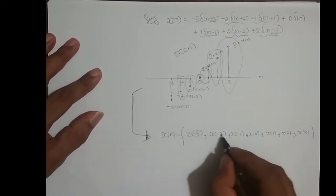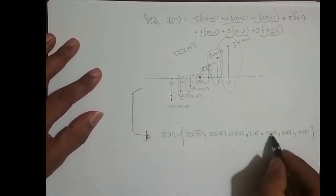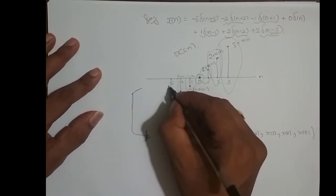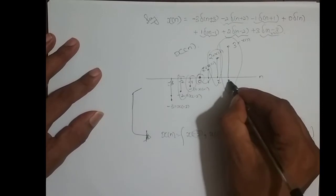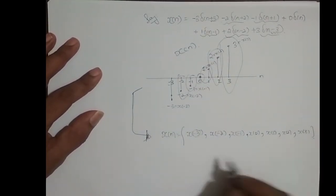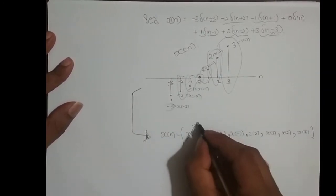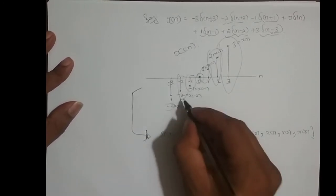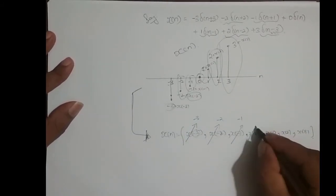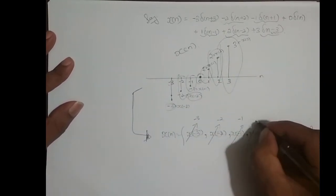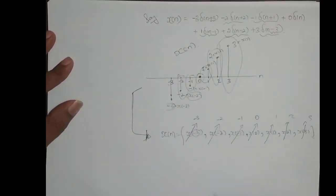The values inside the bracket — minus 3, minus 2, minus 1, 0, 1, 2, 3 — these are the index values n. And the sample values x of minus 3, x of minus 2, x of minus 1, x of 0, x of 1, x of 2, x of 3 are the amplitudes at those indices. So x of minus 3 has amplitude minus 3, x of minus 2 has amplitude minus 2, x of minus 1 has amplitude minus 1, x of 0 has no amplitude so it is 0. Similarly, x of 1 is 1, x of 2 is 2, x of 3 is 3.